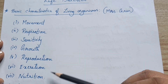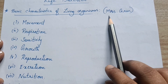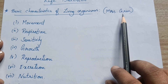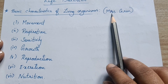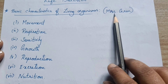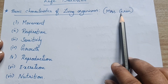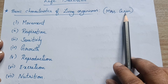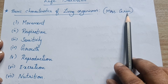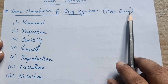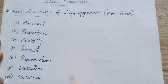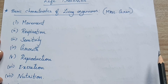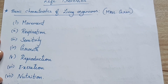You can remember these characteristics by a mnemonic: Mrs. Grin. Movement, Respiration, Sensitivity, Growth, Reproduction, Excretion, and Nutrition. These are the basic characteristics of the living organism. This shows that our organisms are alive.